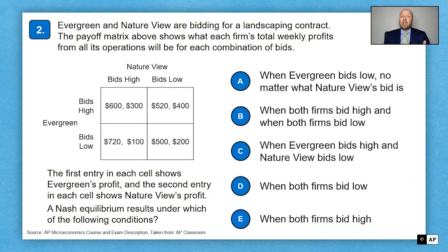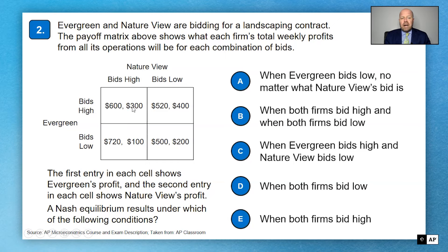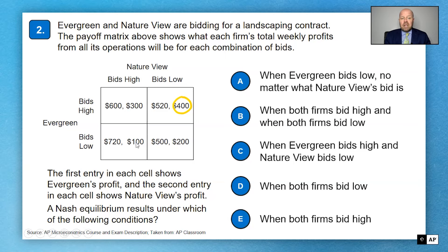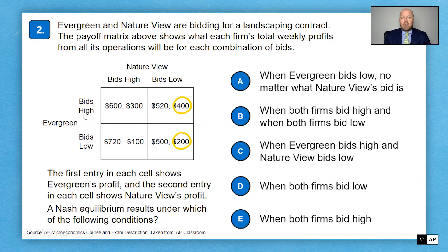They're going to ask about Nash equilibrium. To find it, make your circles. First, if Evergreen bids high, NatureView gets 300 going high or 400 going low — so circle 400. If Evergreen bids low, NatureView gets 100 going high or 200 going low. NatureView always bids low, giving them a dominant strategy.